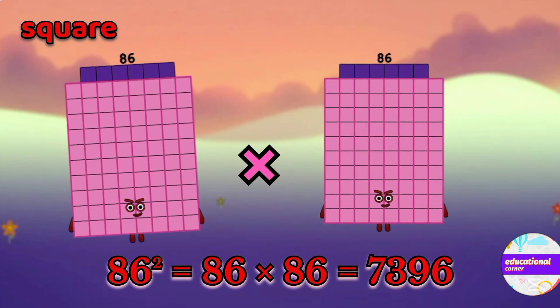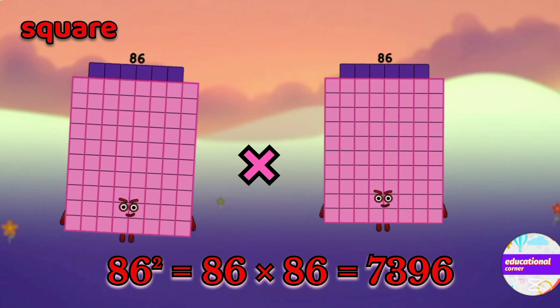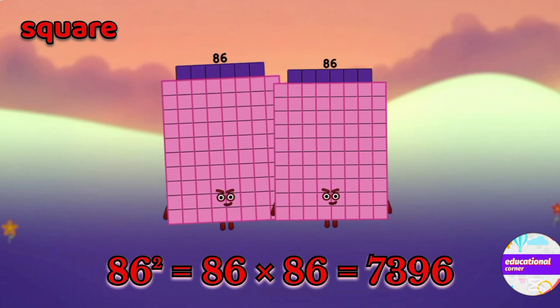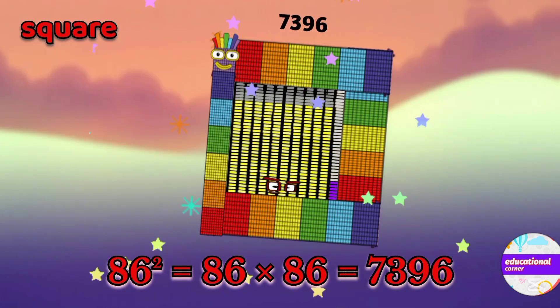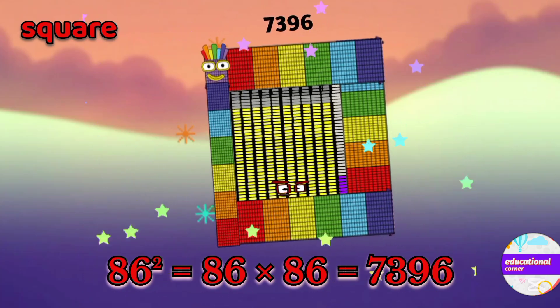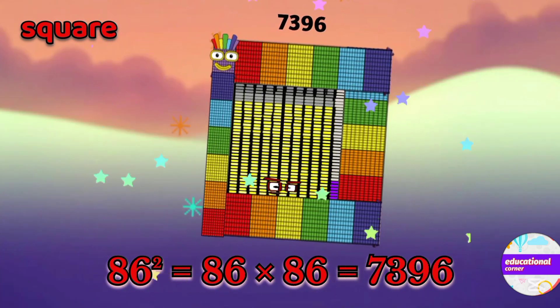86 multiply by 86. So the square of 86 is 7396.